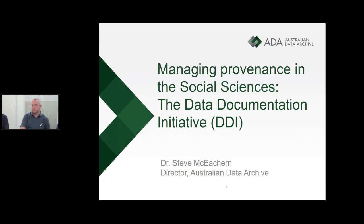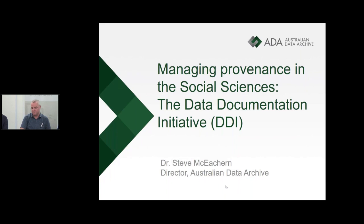Nick's talked about the general PROV model that is increasingly getting used in various spaces. I'm going to talk specifically about the various ways of thinking about provenance in what we're doing in the social sciences — particularly within the DDI standard. Part of the reason we've connected these two together is we're now looking at how we can leverage the PROV standard inside DDI. I want to talk more generally about how we might think about provenance at different stages in the data life cycle.